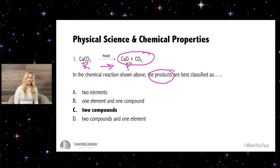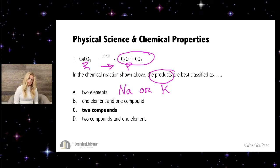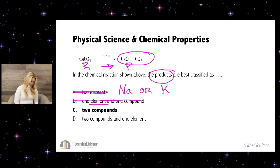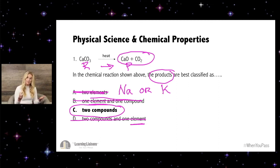Looking at our answer choices: two elements — how can you determine what an element is? Elements are either going to be an uppercase letter and a lowercase letter, or just one uppercase letter. In our products, I don't see just an uppercase and lowercase or just an uppercase letter, so we can automatically eliminate that answer. Because we don't see any elements, we can also eliminate B and D since they both include elements. That concludes two compounds. A compound, just like a compound word — rain and bow — puts two elements together. We've put calcium and oxygen together to make CaO, and carbon and oxygen together to make CO2.